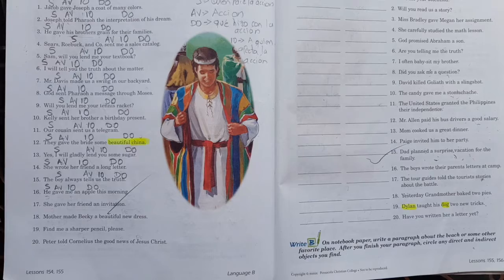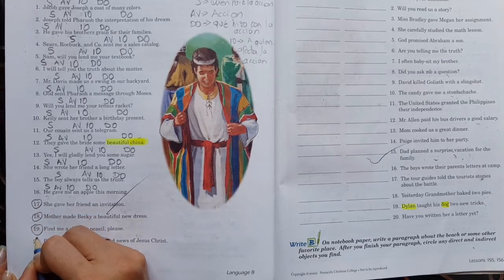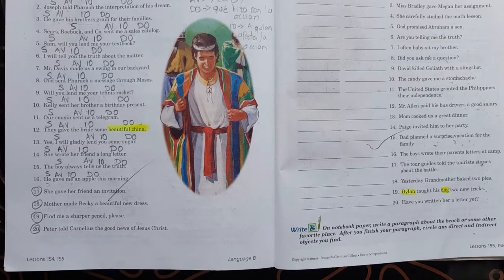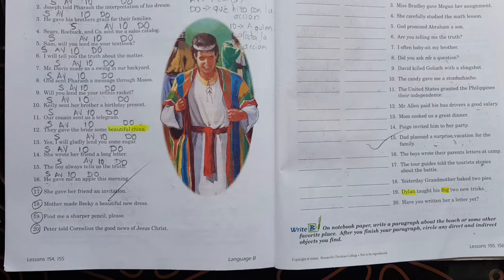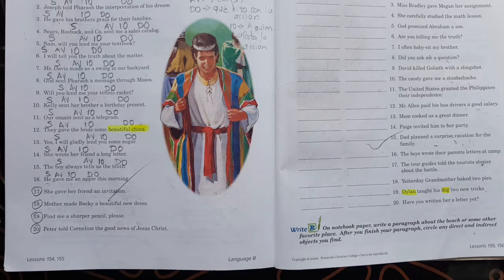A eso se refiere. Number fifteen. The boy always tells us the truth. El chico siempre nos dice la verdad. El chico. ¿Qué hace el chico? Dice. ¿Qué dice? La verdad. ¿Y a quién se la dice? A nosotros. Ahí es el objeto indirecto. Next. Number sixteen. He gave me an apple this morning. Él me dio una manzana esta mañana. ¿Él? ¿Qué hizo? Dio. ¿Qué dio? Una manzana. ¿Y a quién se la dio? A mí. Fácil.